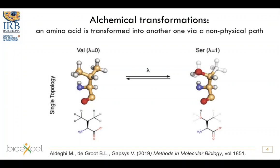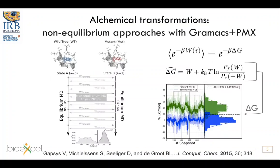What we can do is shift the system from one side to the other, and we can do this in several ways. The approach we will be looking at today is a non-equilibrium approach, which means that we are doing this transition very fast, in the range of 50 to 100 picoseconds. We do this exploiting GROMACS's thermodynamic integration feature, and PMX to generate the topologies and also to analyze the data afterwards.